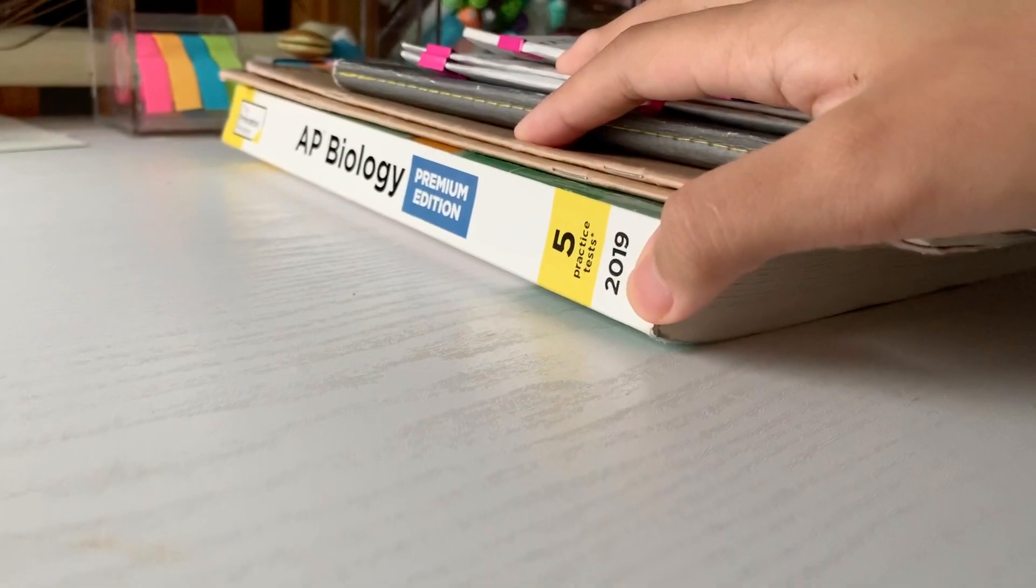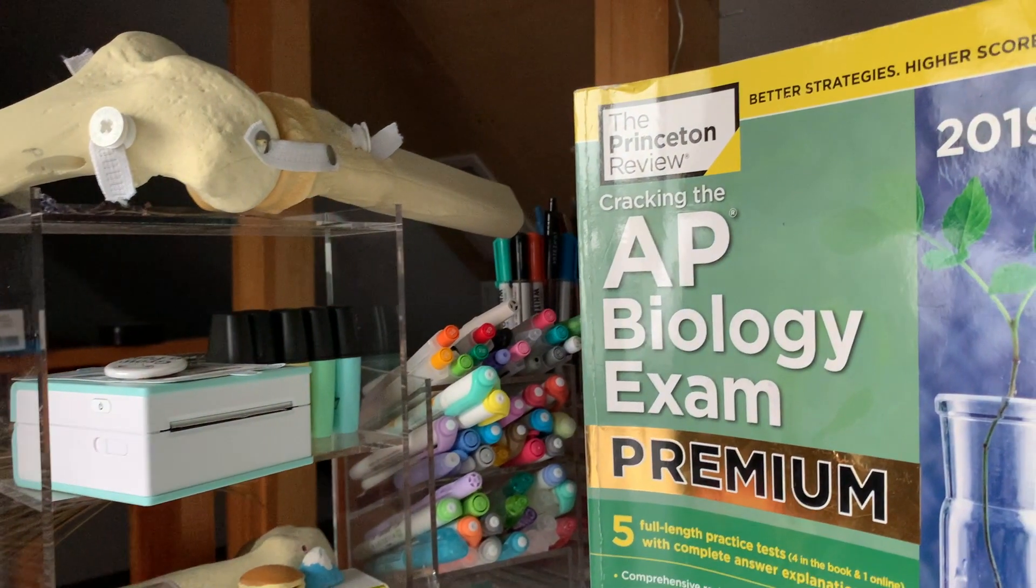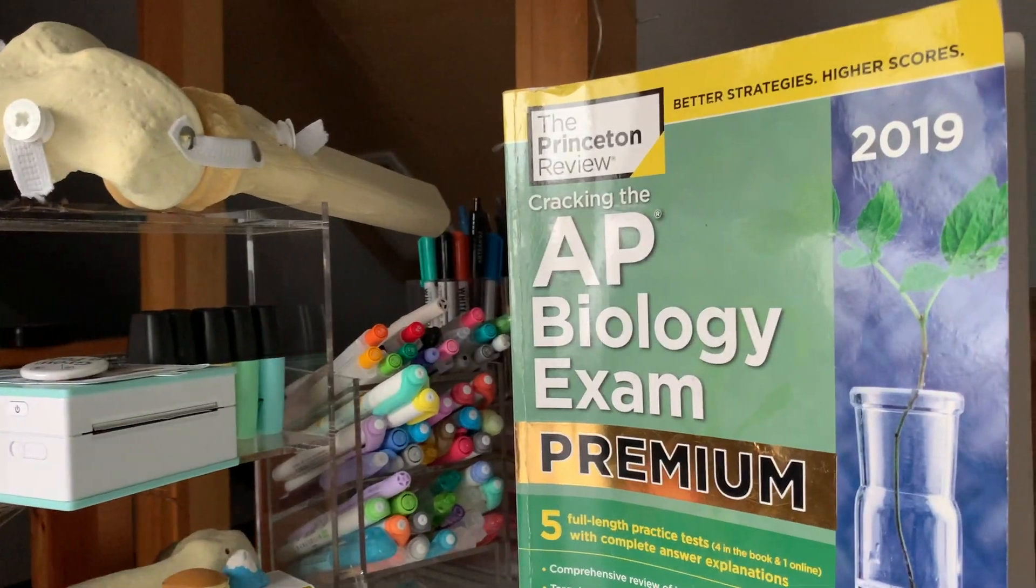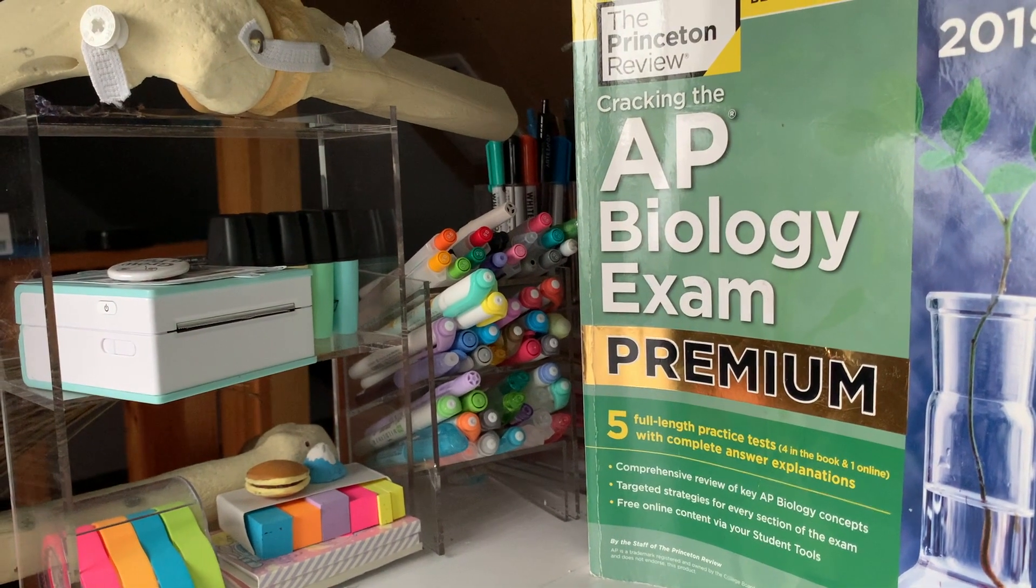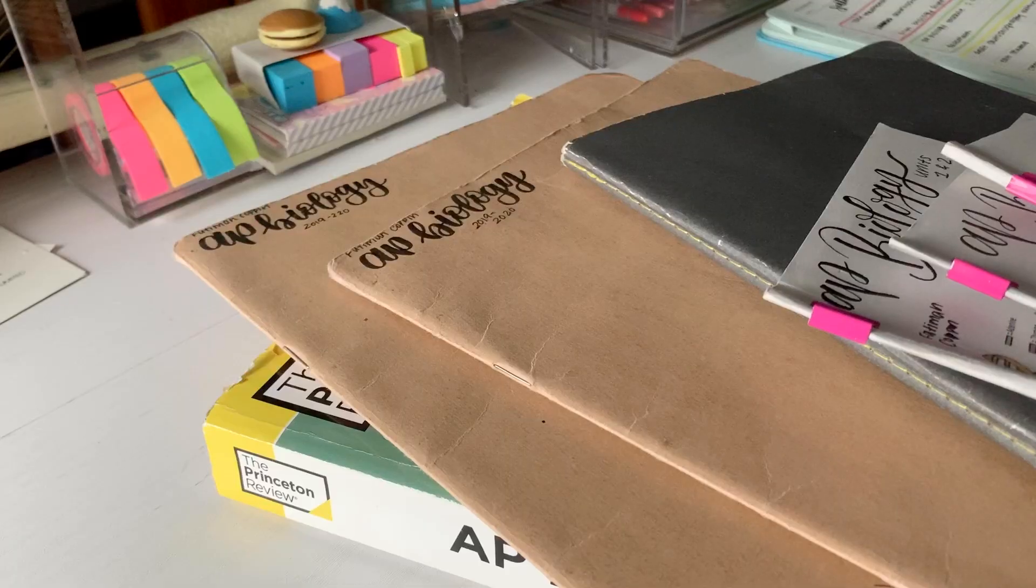Starting from the bottom we have my AP biology Princeton Review book. I honestly only used this to review content for in-class exams and I thought I'd include it since I actually wrote a bit of notes in here for a couple chapters.